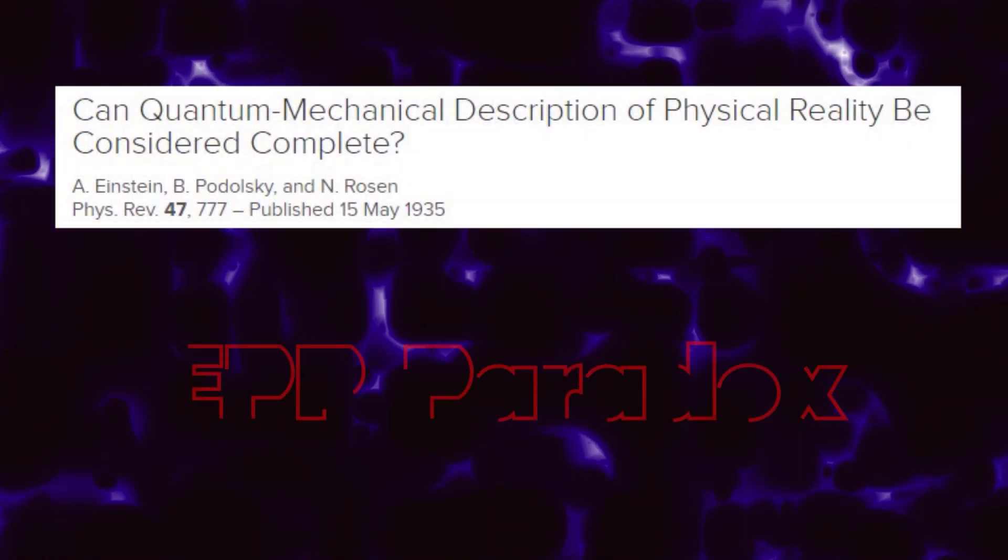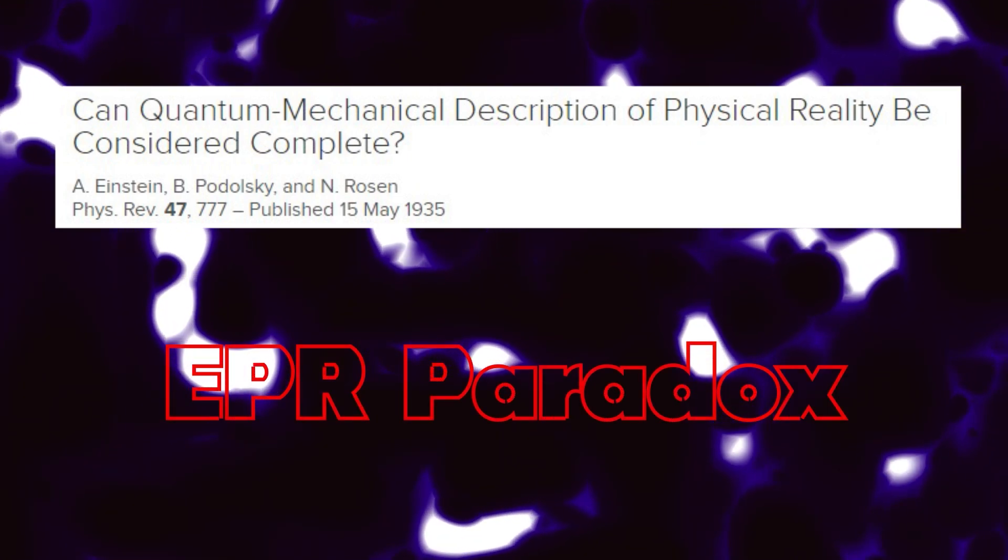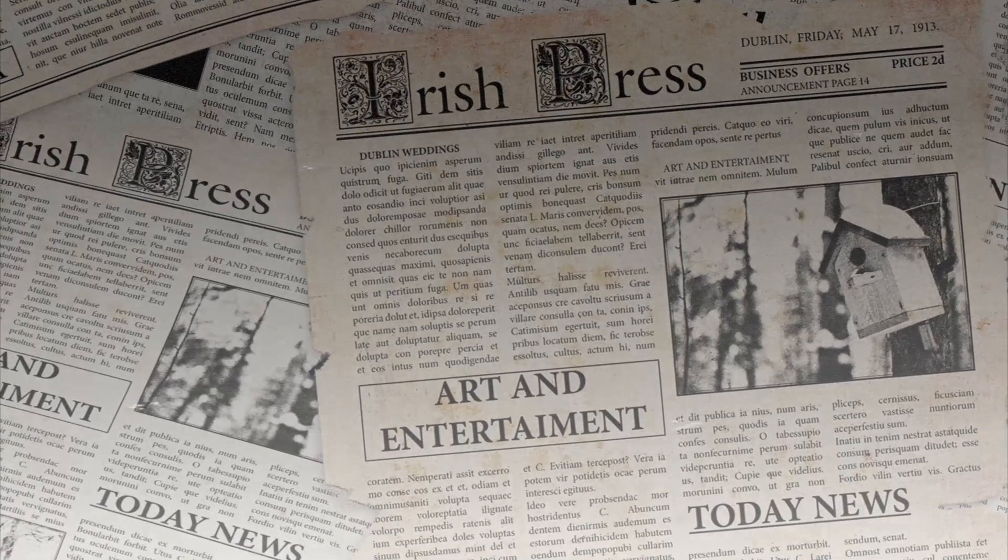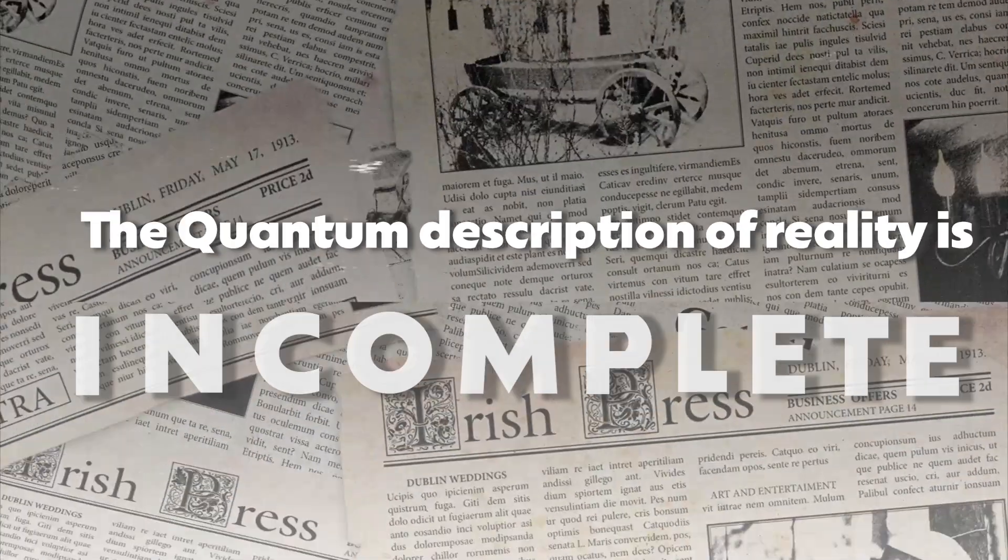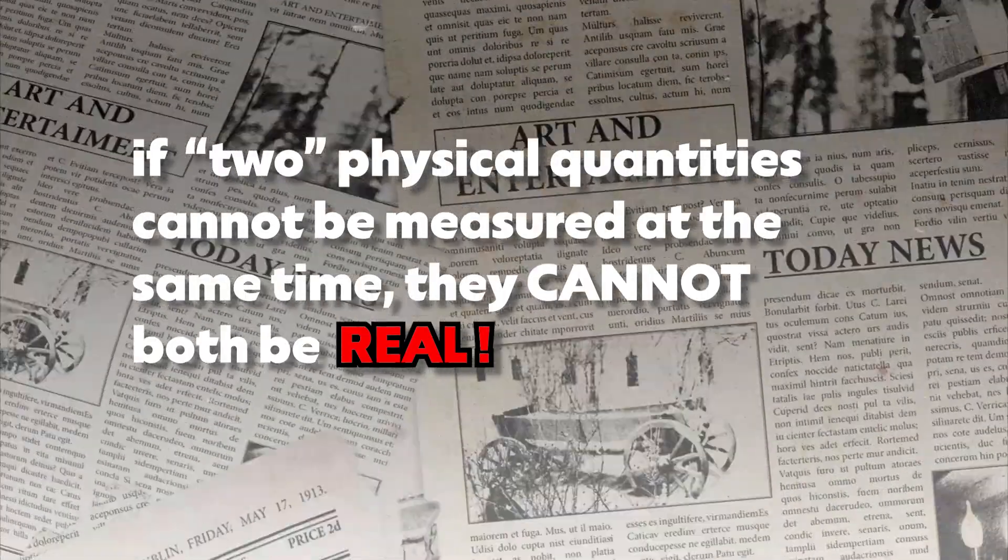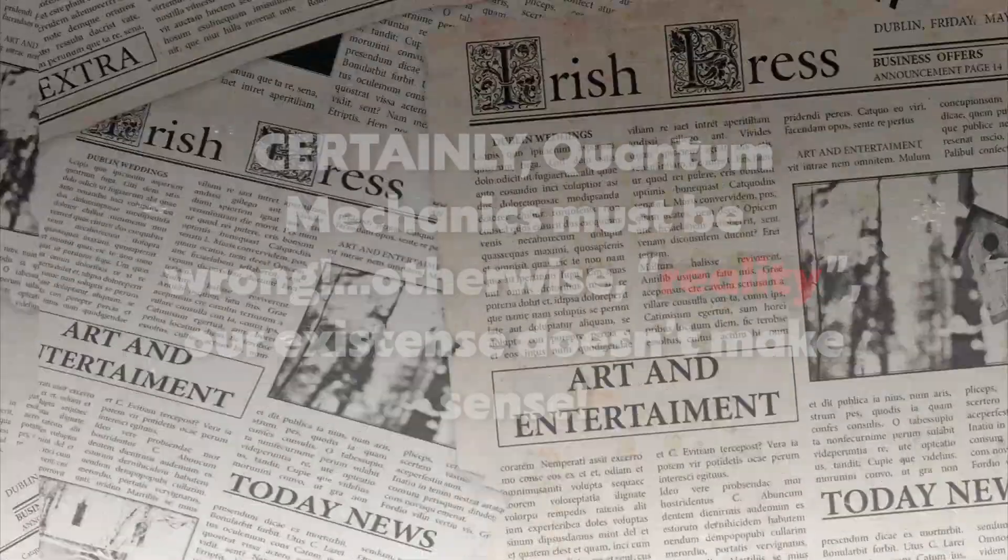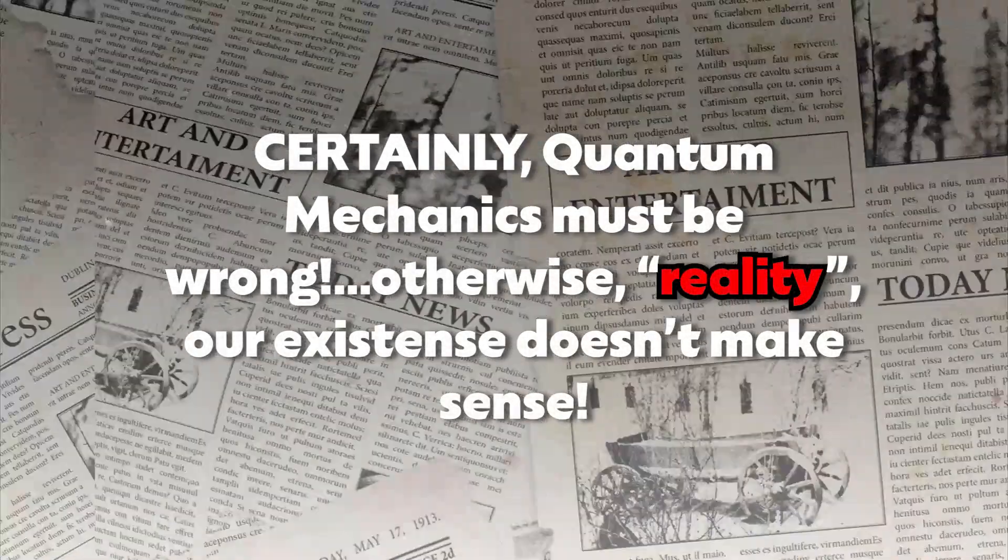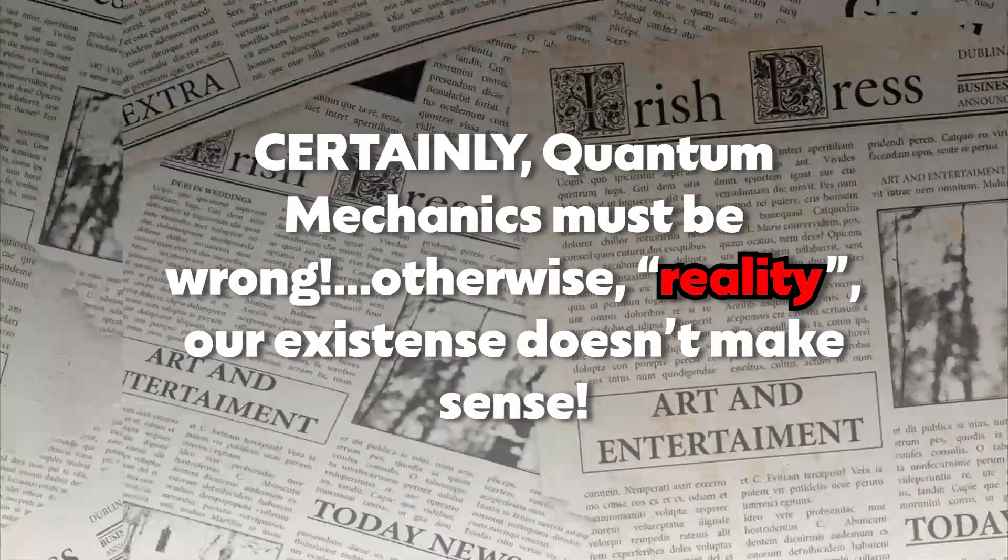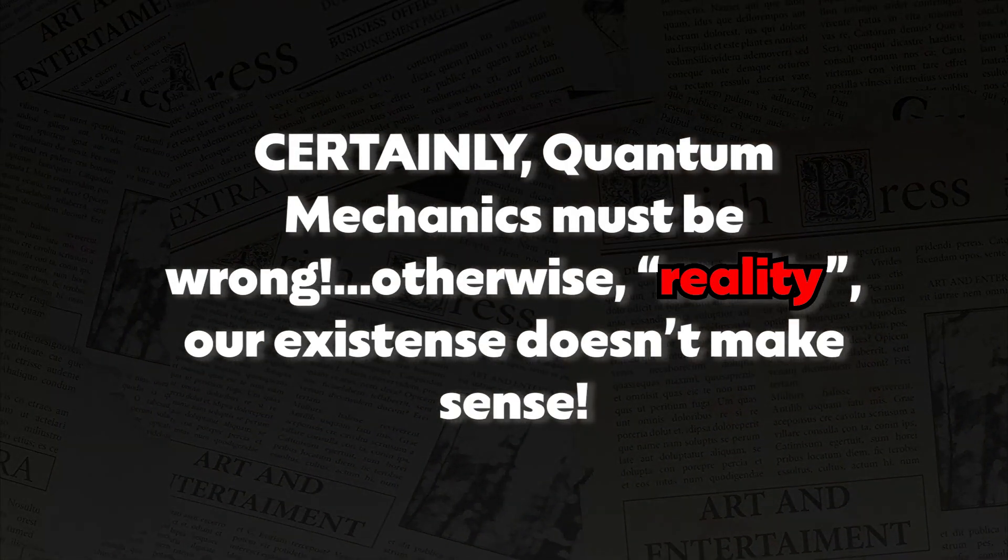Einstein, along with his colleagues Podolsky and Rosen, used this idea to propose what is now known as the EPR paradox. They argued that if quantum mechanics were correct, then either the quantum description of reality is incomplete, or if two physical quantities cannot be measured at the same time, they cannot both be real. In simpler terms, they were saying that if quantum mechanics were true, then the way we think about reality and how things are connected must be wrong.